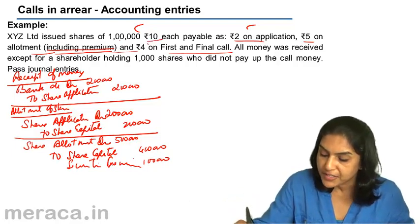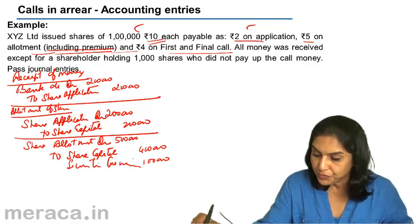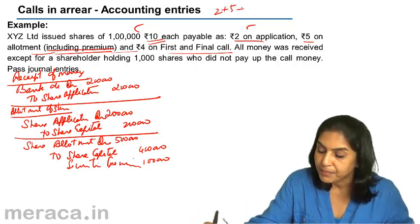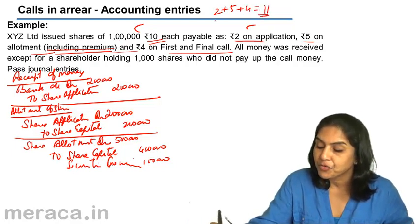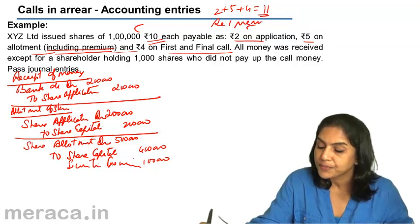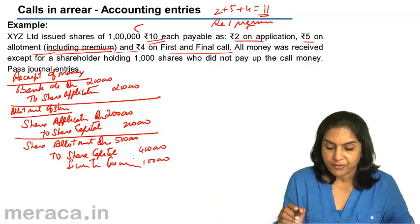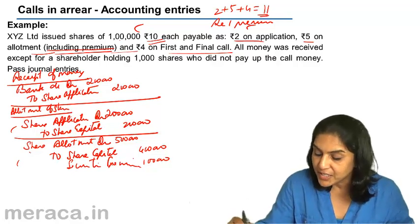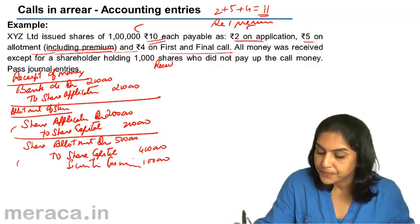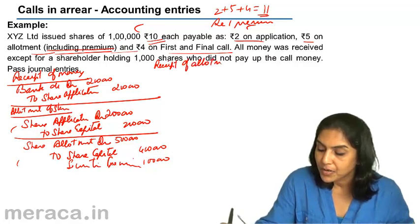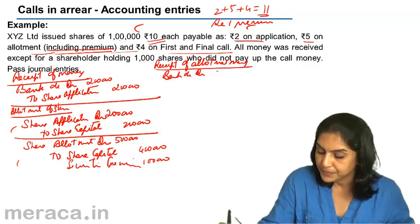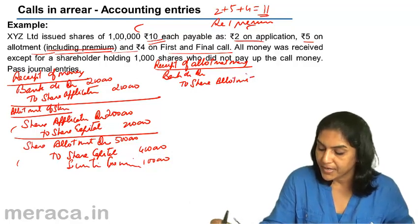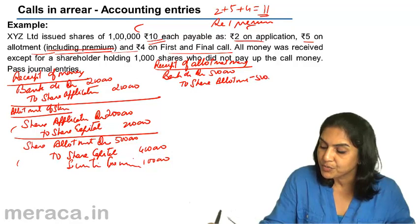This is because the face value is rupees 10 each. The total issue price is 2 + 5 + 4 = 11, therefore rupee 1 is the premium amount. So on allotment of shares, we have two entries: capitalization of application money and allotment money becoming due. On receipt of allotment money, bank account debit to share allotment — entire 5 lakhs has been received.